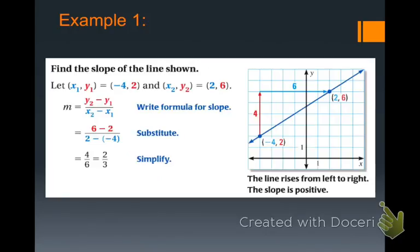Remembering our slope formula, m equals y2 minus y1 over x2 minus x1, or in other words, change in y over change in x. Now we just plug it in. We have y2, which is 6, minus 2, which is y1, so we're looking at this value and this value, over 2 minus a negative 4, so x2 minus x1.